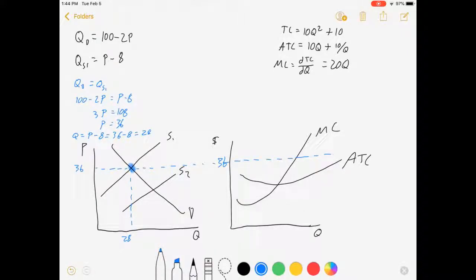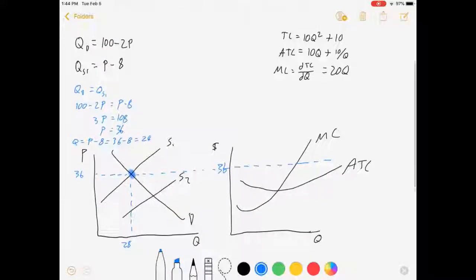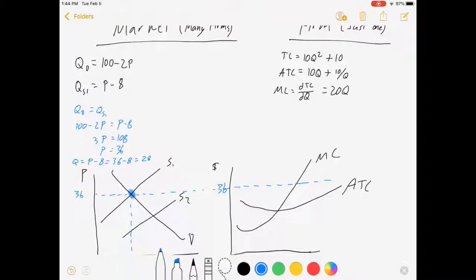Now, how does our individual firm act within this? Well, our individual firm takes that price of 36 as given, and is going to do what they always do, which is setting marginal revenue equal to marginal cost. Now, because price is given, this price is a flat demand curve. I always tell my students, as long as we're using straight lines, marginal revenue curves are the same as demand curves just with double the slope.